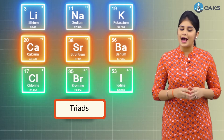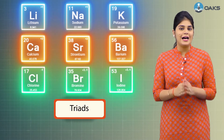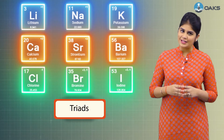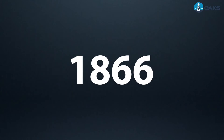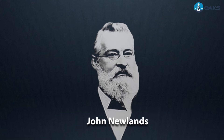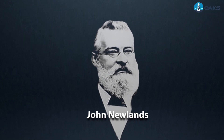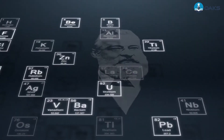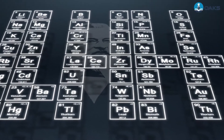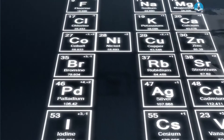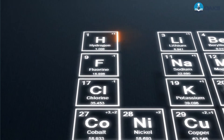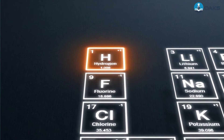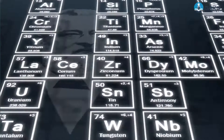However, the drawback was that Döbereiner was able to identify only three triads from all the elements known at that time. Thus, this system of classification was not successful or useful. Then in 1867, John Newlands, an English scientist, proposed another method of classification when only 56 elements were known. Newlands arranged the elements in order of their atomic masses, beginning with hydrogen.